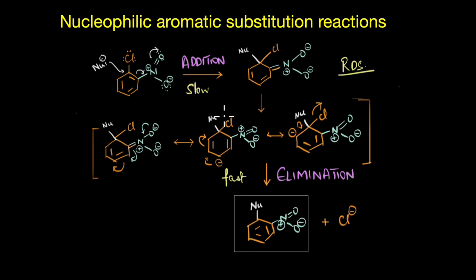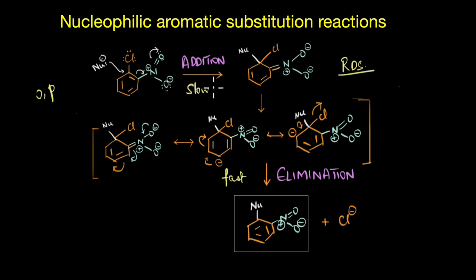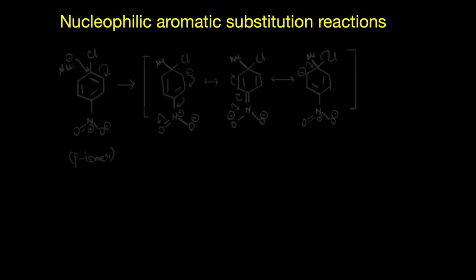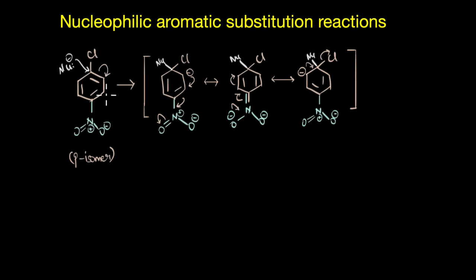Now, the only caveat here is that the electron withdrawing group — in our case the nitro group — should always be present at the ortho or para positions to the leaving group. In the case of the ortho isomer, the electron withdrawing group stabilizes the negatively charged intermediate via resonance, and the same thing happens in the case of the para isomer. Here again, the pi electrons get delocalized onto the more electronegative oxygen atom of the nitro group, withdrawing electron density from the ring and facilitating a nucleophilic attack.